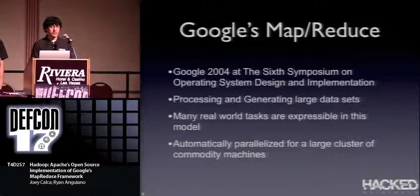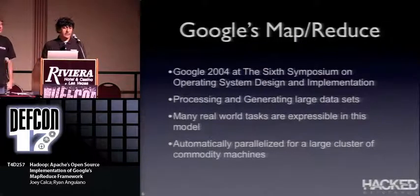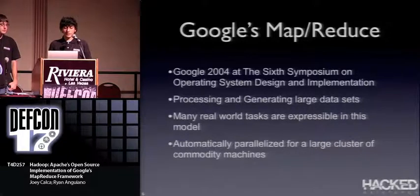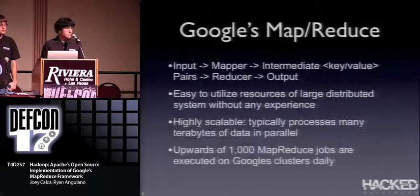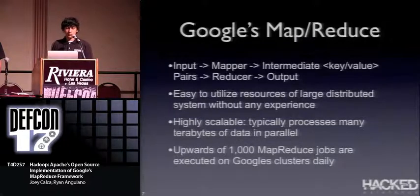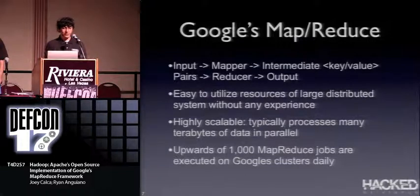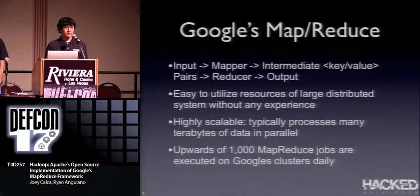In 2004, Google released a paper outlining their MapReduce framework. They had a huge problem processing and generating large data sets, so they invented MapReduce to solve it. Many real-world tasks are expressible in this model, and it's been automatically parallelized for large clusters of commodity machines. The workflow: input data goes through your mapper, which outputs intermediate key-value pairs, which get passed to the reducer, and the reducer outputs your final result. It's highly scalable — designed to handle from a couple gigabytes up to terabytes — and Google runs about 1,000 MapReduce jobs a day.